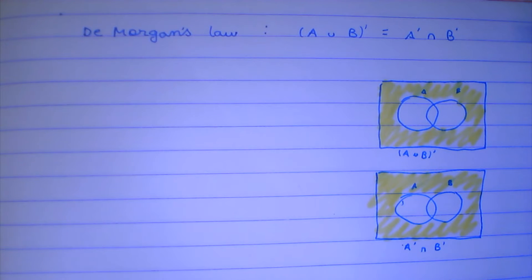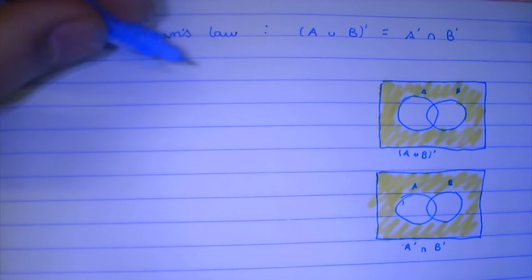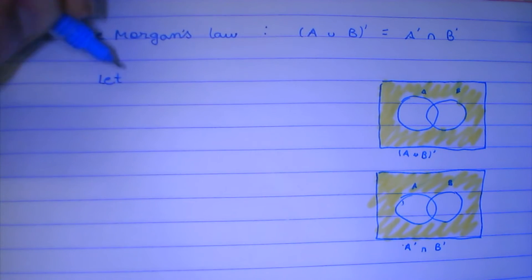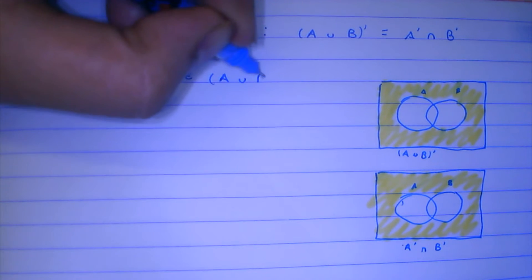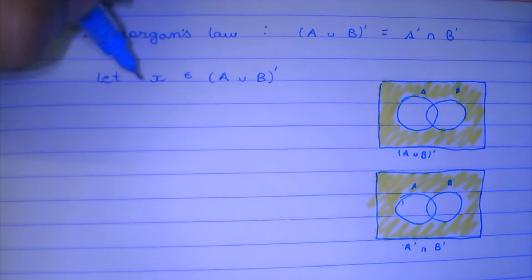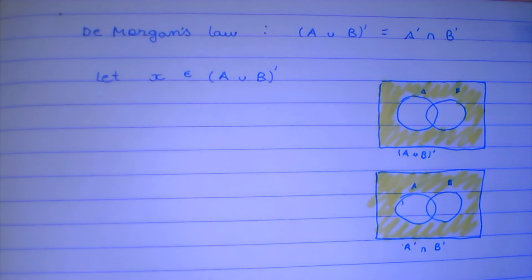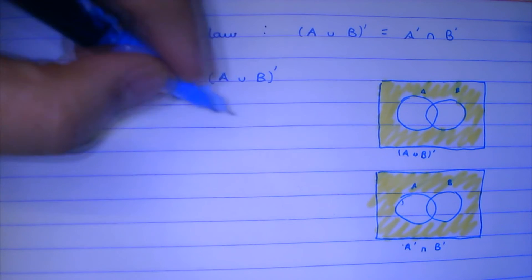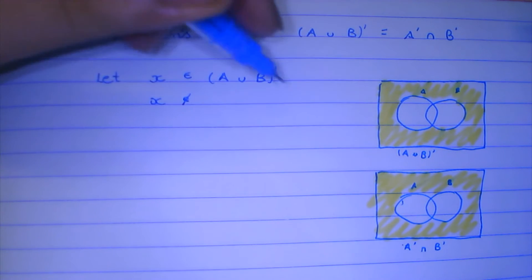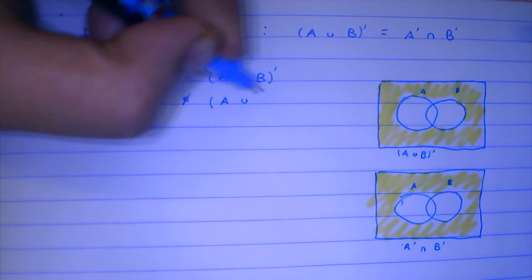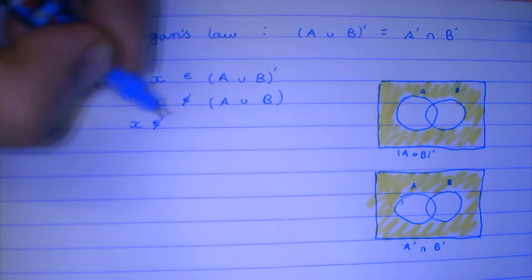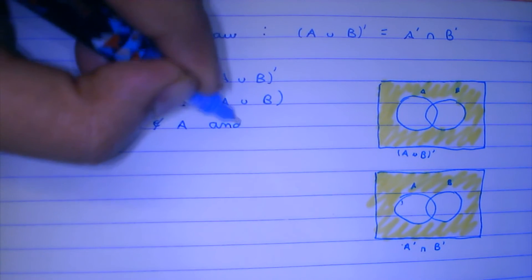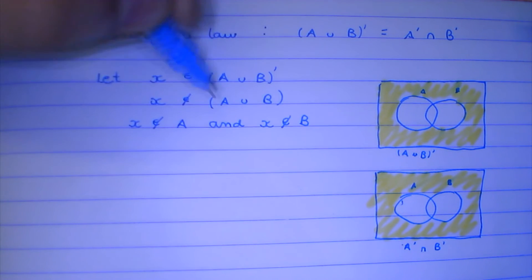So they are equal — the De Morgan's Law holds. But let us now prove it analytically. Let x belong to the complement of A union B. If x represents any element which belongs to the complement of A union B, it means that x does not belong to A union B, which means x does not belong to A and x does not belong to B.